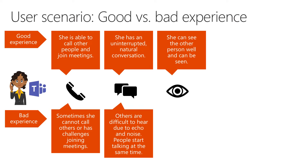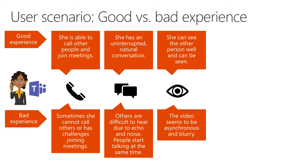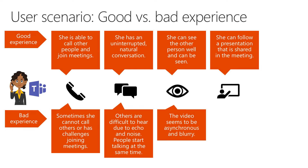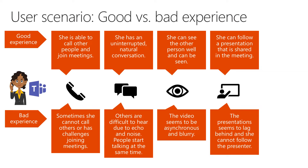In terms of video, she just wants to see the other person so that she can get this additional amount of information. She wants to have a clear picture and also needs to be seen very well. In a bad experience, the video might be blurry or asynchronous — she could see the lips moving of a person but the person is not talking because they already talked before, or the other way around. And then if someone is presenting, everyone should see in high quality what is being presented in real time. If there would be a delay and the presenter talks about something people can't see yet, it makes it very hard to follow what's being shown.